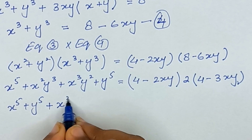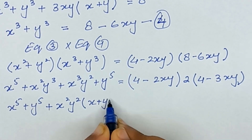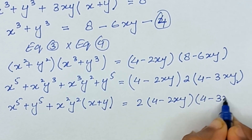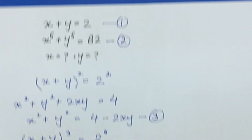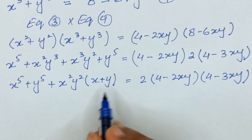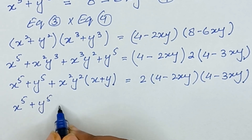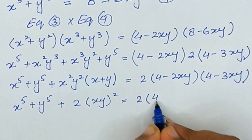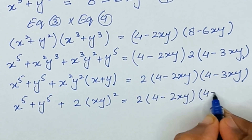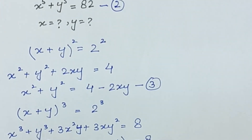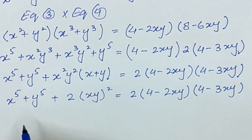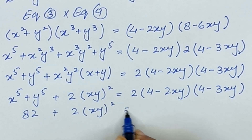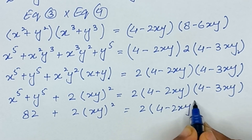From those two middle terms, x²y³ + x³y² = xy²(x+y). Since x+y = 2, this becomes 2xy². So the left side is x⁵+y⁵ + 2(xy)². The right side expands as (4−2xy)(4−3xy), factoring out 2 from the first bracket. Substituting x⁵+y⁵ = 82, we get 82 + 2(xy)² = 2(4−2xy)(4−3xy). Dividing both sides by 2 gives 41 + (xy)² = (4−2xy)(4−3xy).